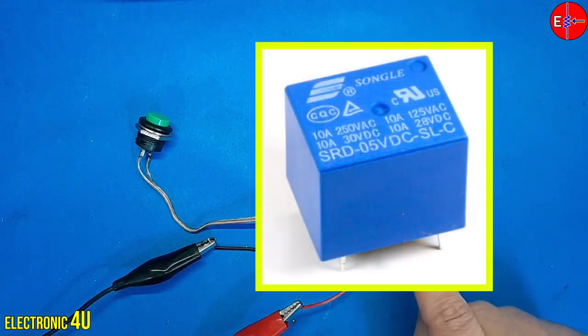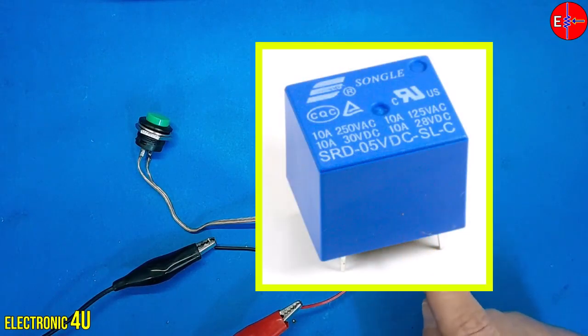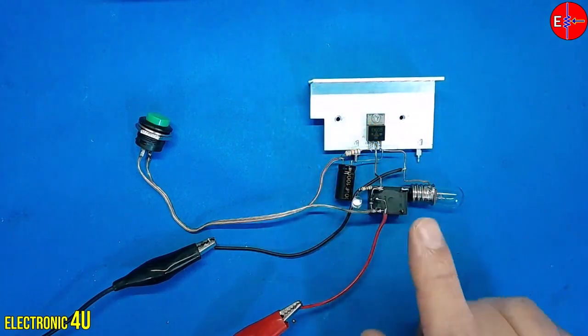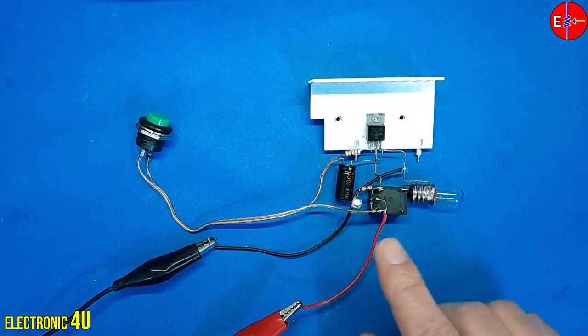The voltage of the relay coil and the current it can tolerate are indicated on the relay body. Now, I will draw the circuit for you, explain how it works, and show you how we can optimize the circuit.